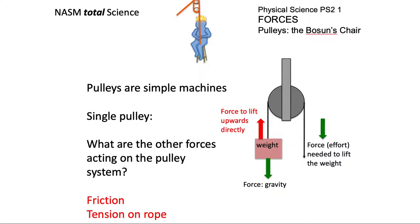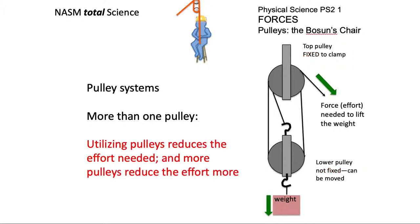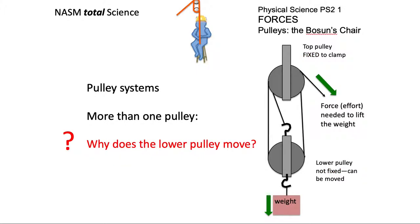In most of the calculations we do, we'll assume the system is frictionless. Why is it better to have more than one pulley? Let's have a look at that. The top pulley is going to be fixed to a clamp, the ceiling, something rigid enough for the load that you're lifting, and the lower pulley is not fixed.